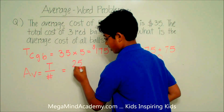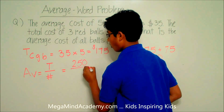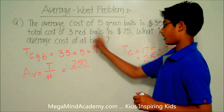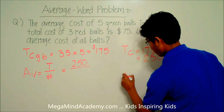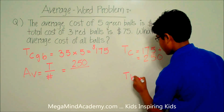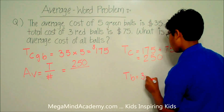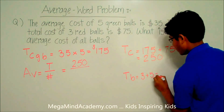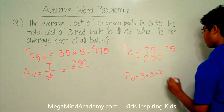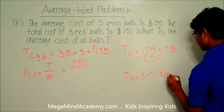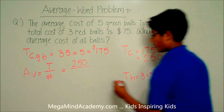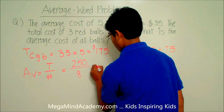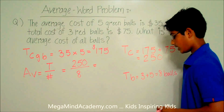So it's $250 over the number of balls, which is five green balls plus three red balls. Total balls is equal to three plus five, which is equal to eight balls. So the average is $250 over eight.